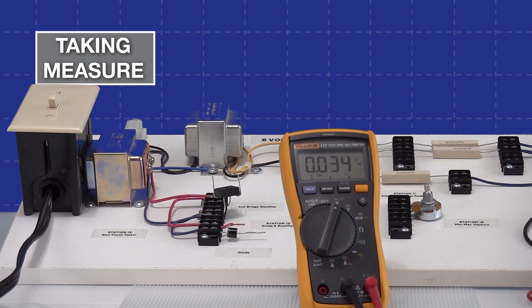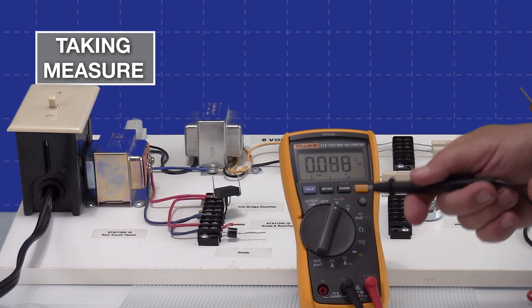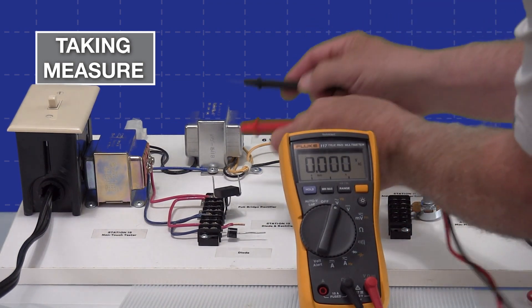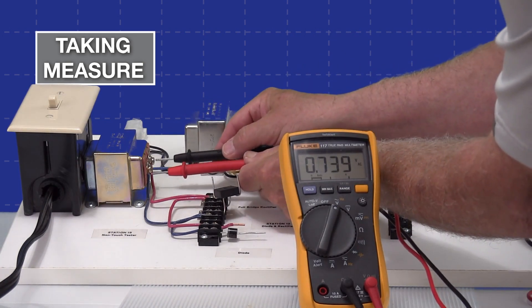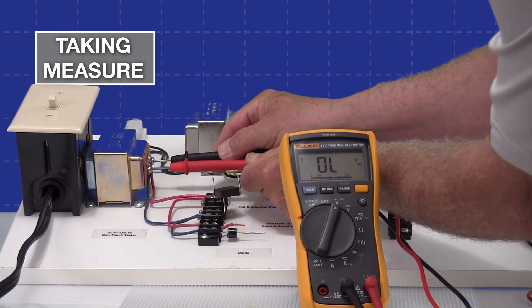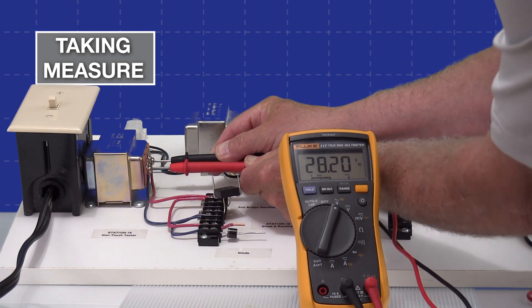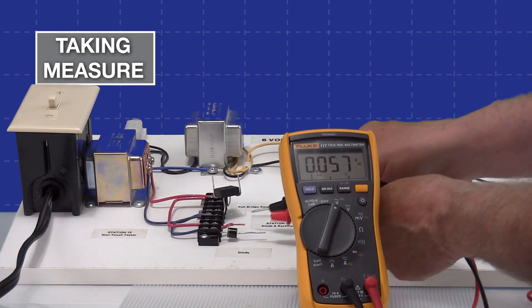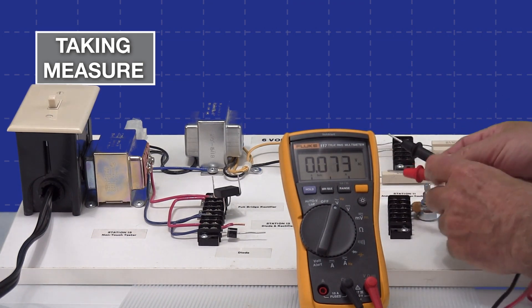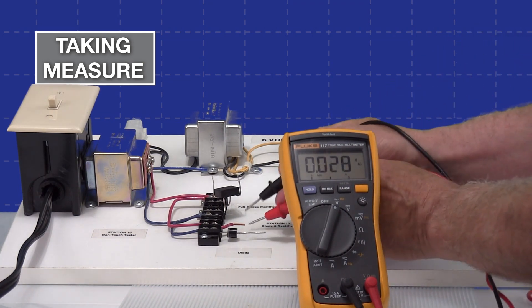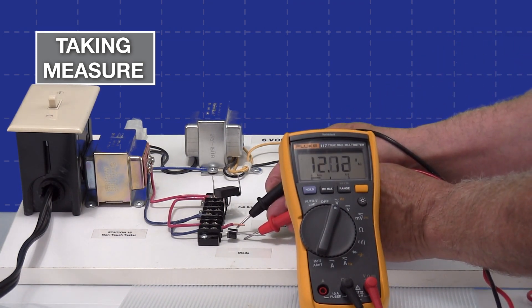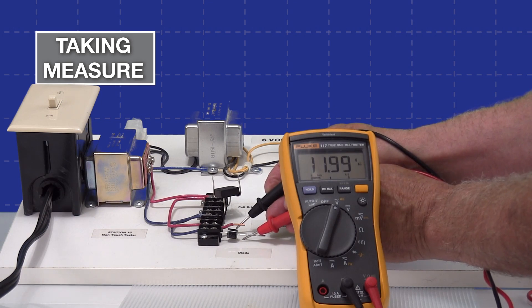The last thing we'll do is take a look at this with a Fluke 117 meter. And I'm going to read the transformer first. So I have it set for AC voltage. And polarity doesn't matter on that. So I take a measurement. And you can see I get 28.2 volts AC. This is actually a DC on the diode. If I leave it set for AC and try to take a measurement, it gives me a measurement, but it gives me 12 or like 11 volts.